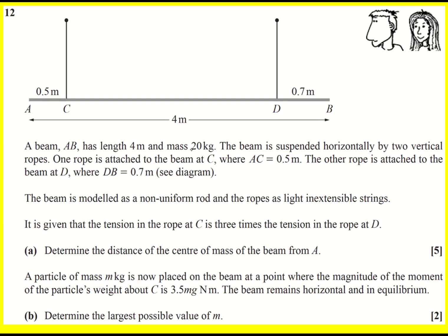We have a beam, length four meters, mass 20 kilograms, and it's suspended horizontally by two vertical ropes which is shown. It's modeled as a non-uniform rod and the ropes as light and extensible strings. It's given that the tension in the rope at C is three times the tension in the rope at D. So let's get some forces on. That would be T and that would be 3T.